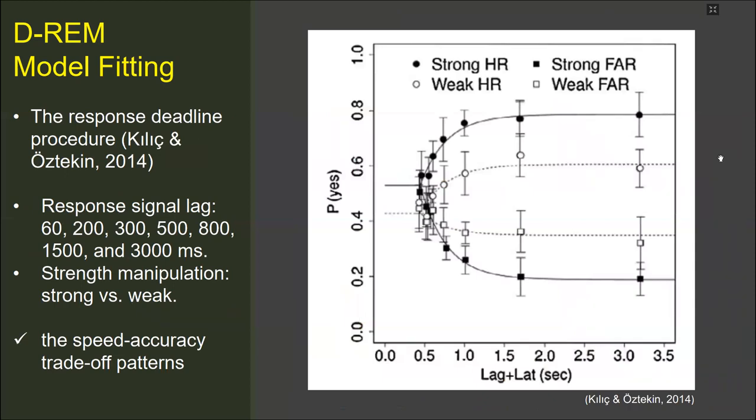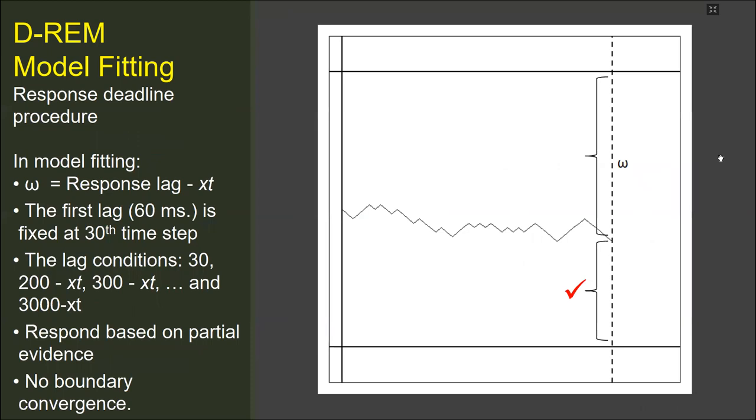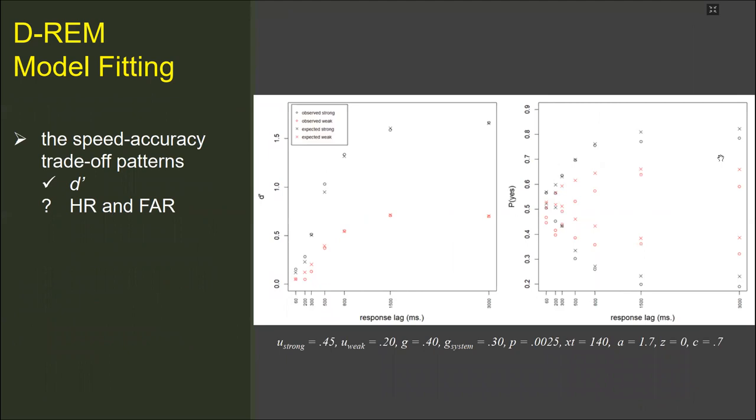In the recognition test with the response deadline procedure, the response time is determined by a signal. The time of the response signal is manipulated in this task so that the speed accuracy tradeoff is revealed. For the response deadline procedure, I have used Kulic and Oztekin's study data. In their experiment, the response lag and the memory strength lag were manipulated. In the model simulations with the response deadline procedure, the stopping time is determined by a response signal. If the signal comes before a decision is made, the decision of the boundary of which is closer to the current evidence is chosen. The boundaries do not converge as the subject doesn't need to be less cautious to respond. Following these assumptions, the model simulations reveal these results.